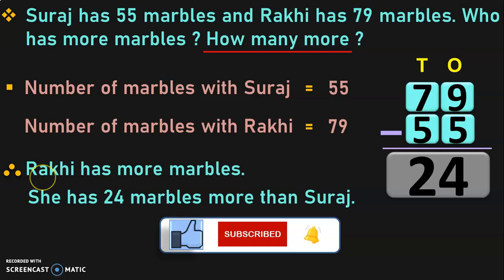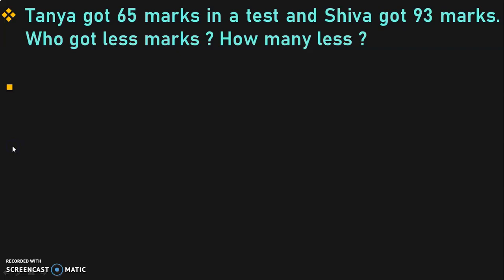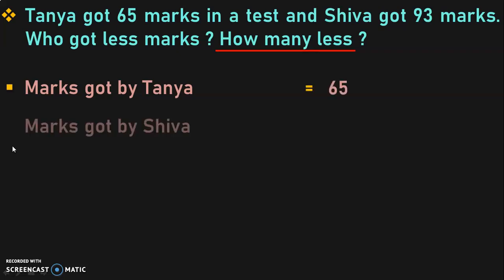Hope you have understood how to identify the keywords, write down the statements, work out the calculation and write the answers. Let us move on to the next sum. Tanya got 65 marks in a test and Shiva got 93 marks. Who got less marks? How many less? Let us identify the keywords. We have one keyword: 'how many less,' which indicates we are going to do the subtraction operation. Marks got by Tanya is equal to 65. Marks got by Shiva is equal to 93.